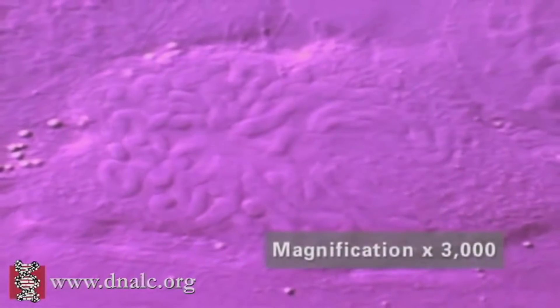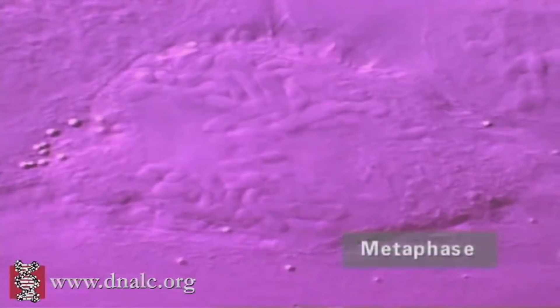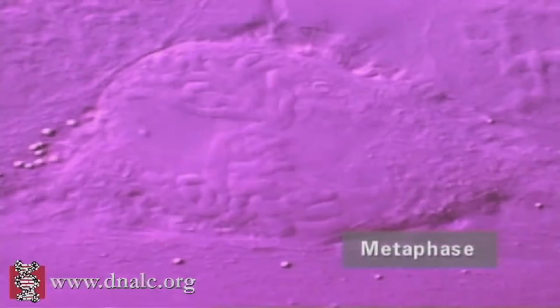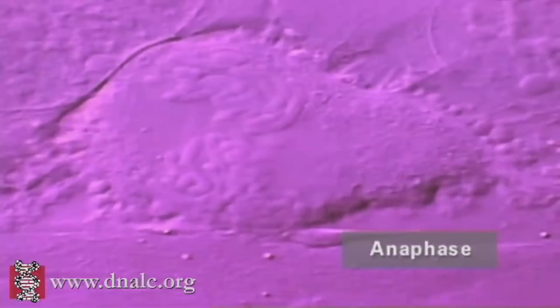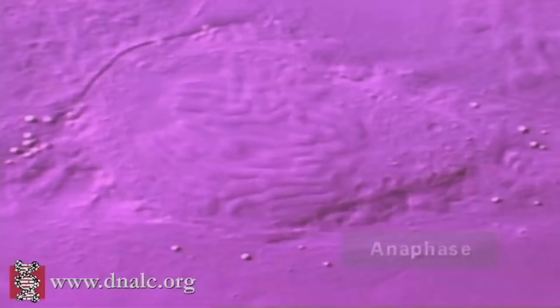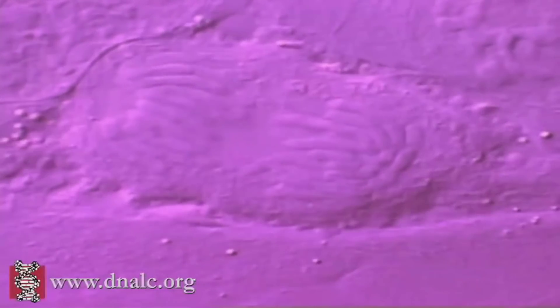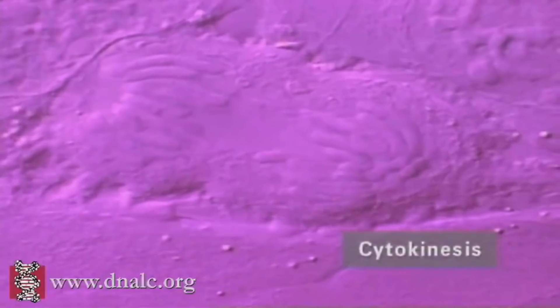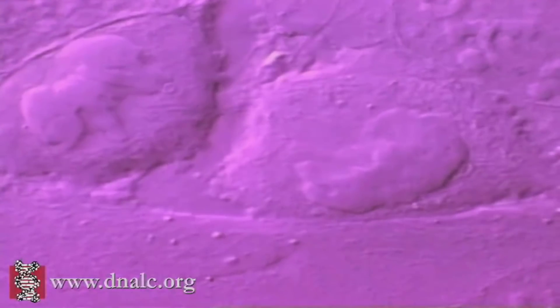Today we're going to look at the way living things like your cells grow, repair themselves, and reproduce. Unicellular organisms divide to reproduce themselves. The cells of multicellular organisms also divide to develop a fertilized egg, seed, or spore, to grow, to repair the body, replacing damaged cells. Each cell has a life cycle called the cell cycle, of which cell division is only one part.